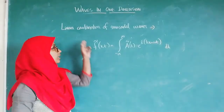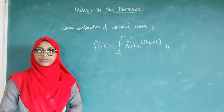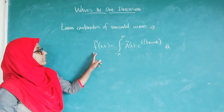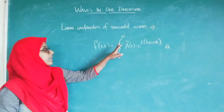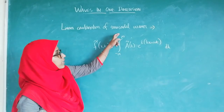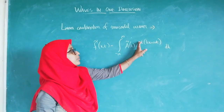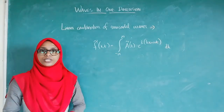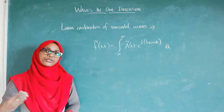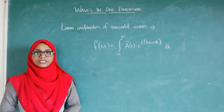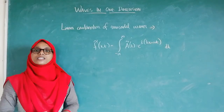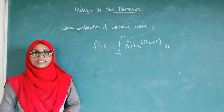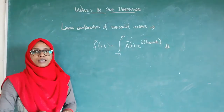The next topic is the linear combination of sinusoidal waves. The linear combination can be written as f(x, t) = ∫ from −∞ to +∞ Ã(k) e^(i(kx − ωt)) dk, where k is allowed to range from negative to positive values representing all directions. It is important to note that any wave can be represented as a linear combination of sinusoidal waves.